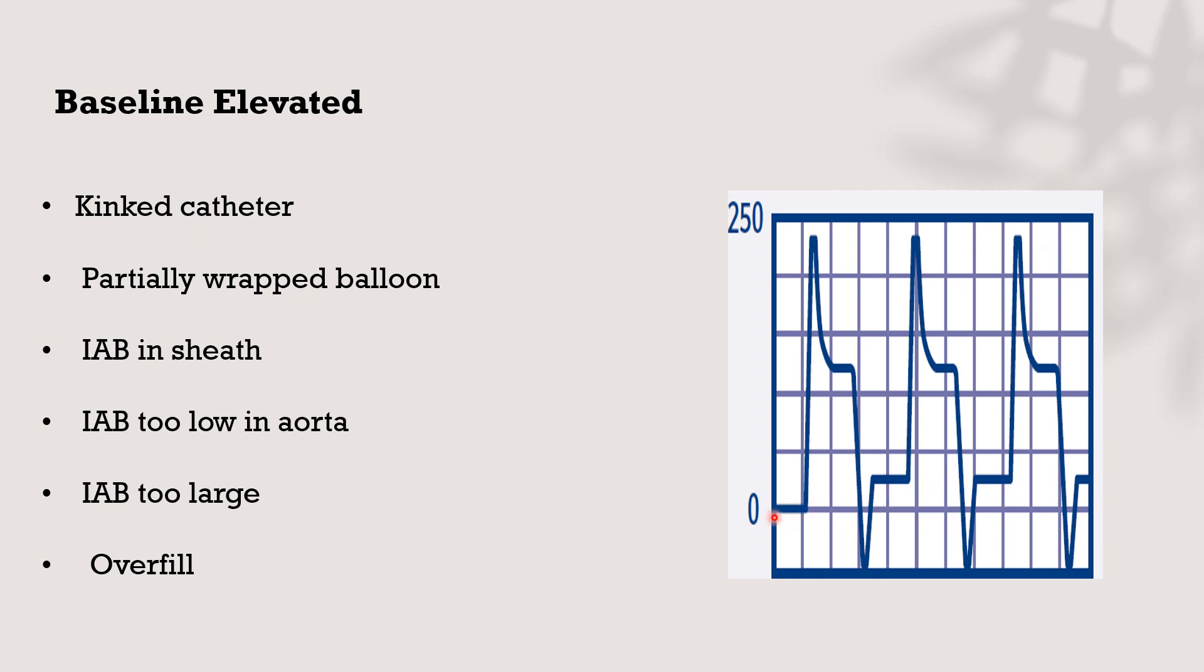In this diagram, we will find that this is the baseline. Here the baseline is elevated. So this means the catheter is kinked or a partially wrapped balloon, or the intra-aortic balloon is in a sheath, or the intra-aortic balloon is too low in the aorta or too large or overfilled. The helium is trapped inside the balloon due to different causes like kinking, partial wrapping of the balloon, or the balloon inside the sheath. All of this will cause the baseline to be elevated.